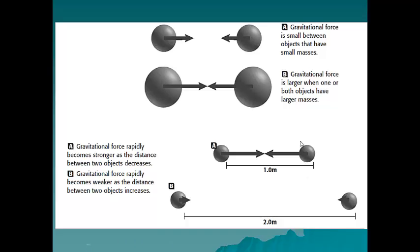Now let's take a look at this. So the gravitational force between A and B, it is less here because the objects have smaller masses. In this picture, the gravitational force is bigger here because the objects are closer together.